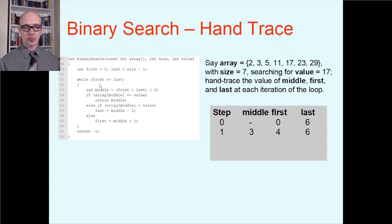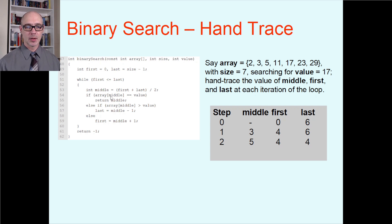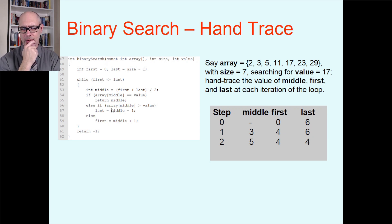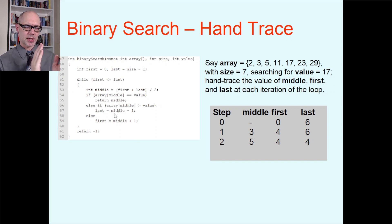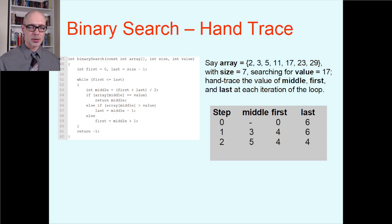Step 2: Is first (4) less than or equal to last (6)? Yes, so we go through the body again. Middle = average of 4 and 6 = 5. Array index 5 is 23. Is 23 equal to 17? No. Is 23 greater than 17? Yes — so we need the front half of this slice. Keep first at 4, but update last to middle minus 1, which is 4.